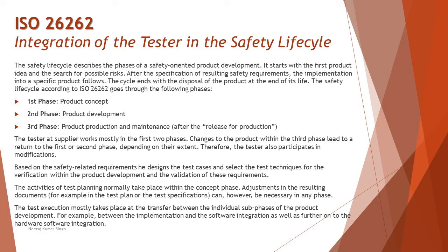Test planning activities normally take place within the concept phase, since that is the planning phase. However, adjustments to the resulting documents — for example, in the test plan or test specifications — can be necessary in any phase. A plan is defined early in the life cycle, but as you proceed with creating test cases, implementing them, preparing test suites, and executing them, you may find the plan needs tweaking or a deviation. At any stage you can fine-tune it on the move.